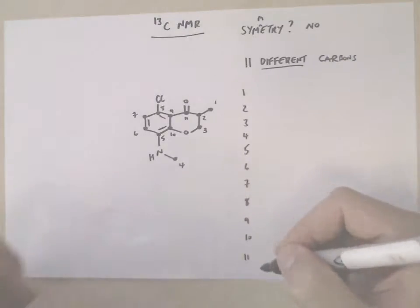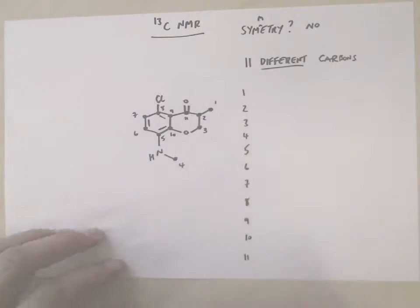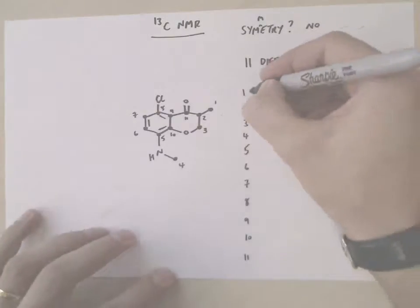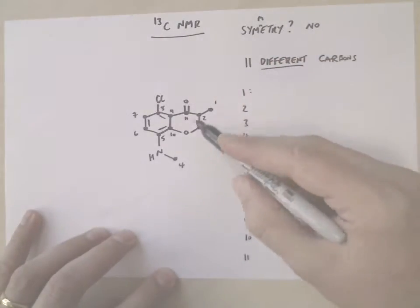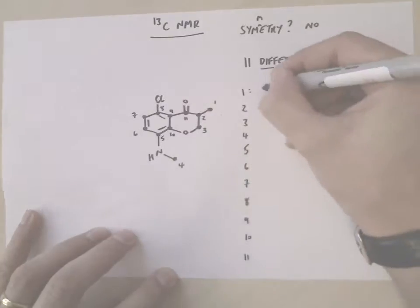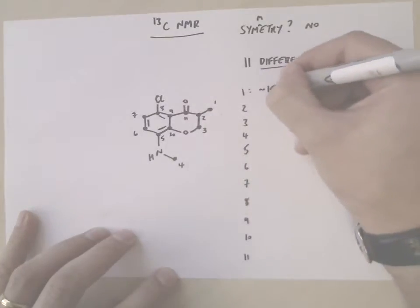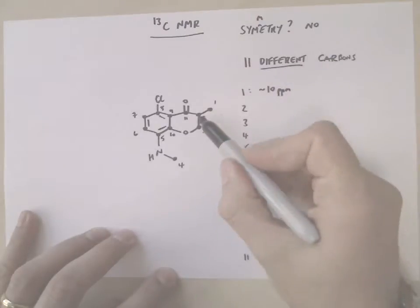So again, if we number these out, then you simply have to look at the correlation charts that you're given in lectures and analyze where you think each of these carbons comes. So carbon 1, it's a simple methyl group attached to carbon, and if you look at correlation charts, they come typically around 10 ppm.